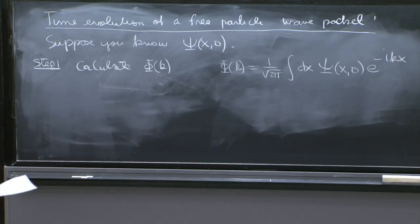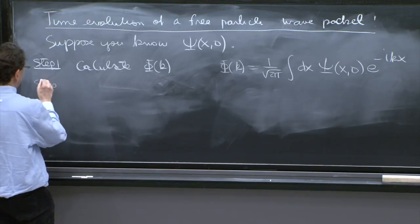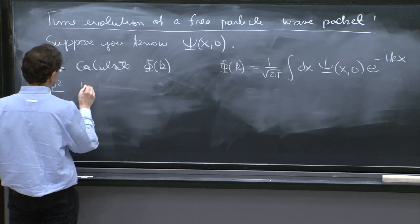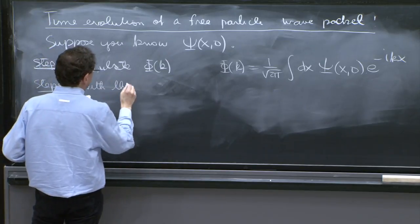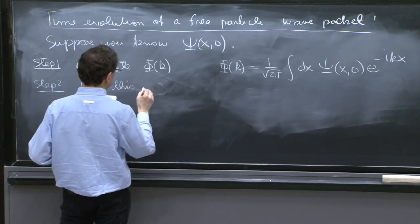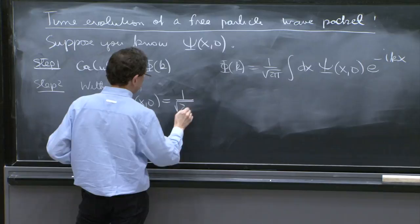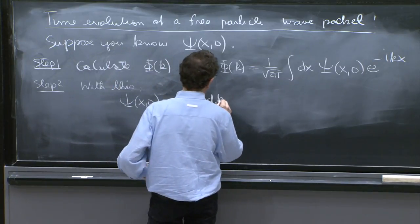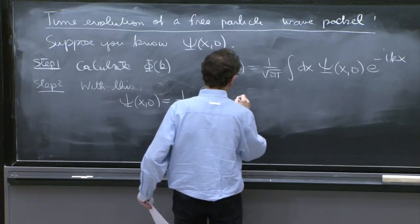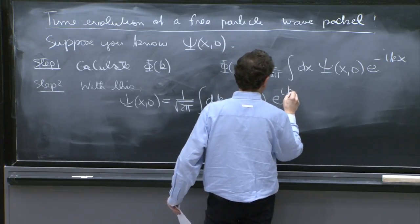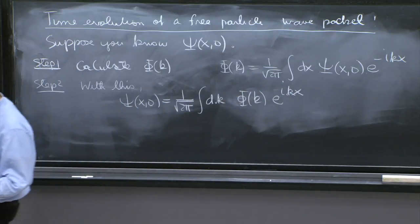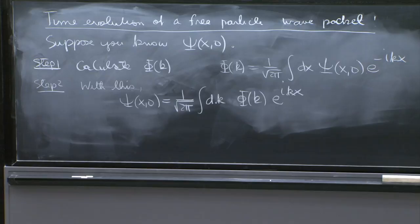Step two, with this, now rewrite and say that ψ(x,0) is 1 over square root of 2π dk φ(k) e to the ikx. So that has achieved a rewriting of ψ(x,0), which was an arbitrary function, as a superposition of plane waves.